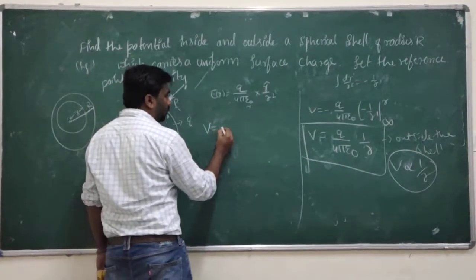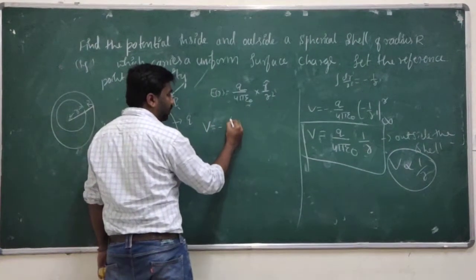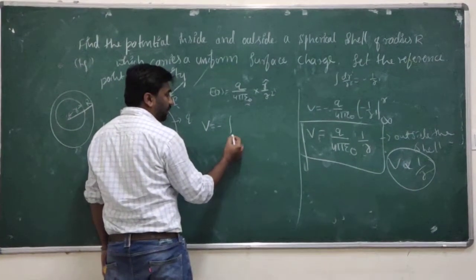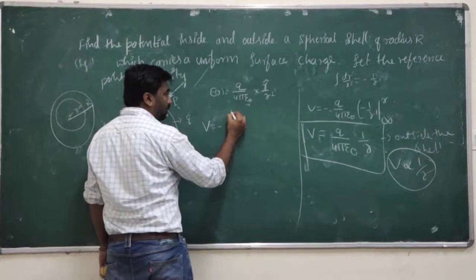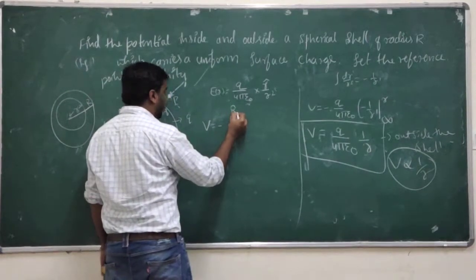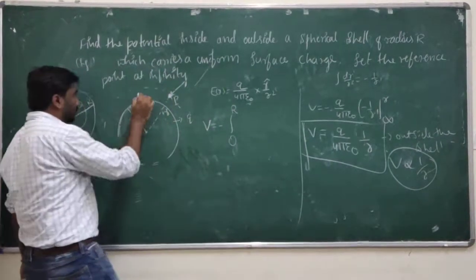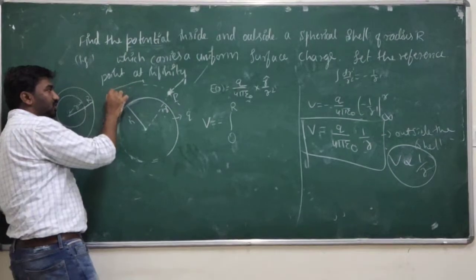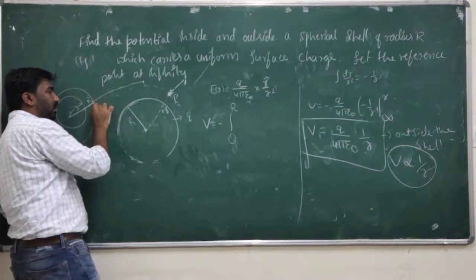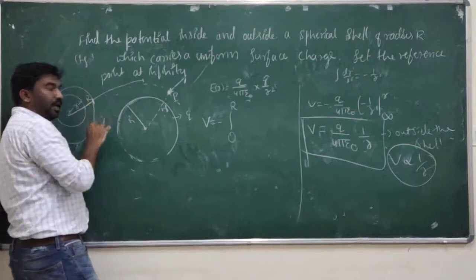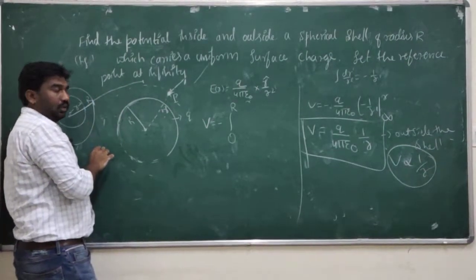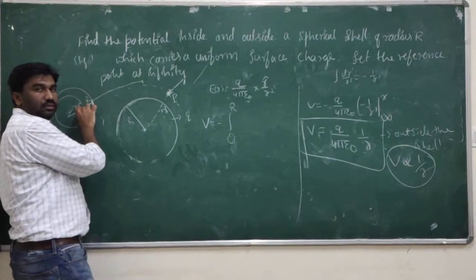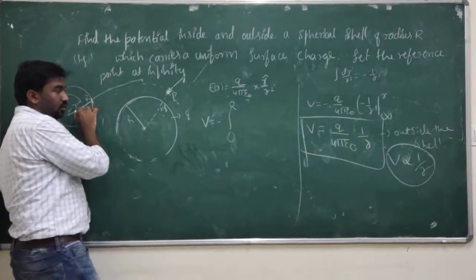V is equal to minus of the integral from the reference point to a given point r. For example, this is our reference point. First we have to bring the charge from the reference point to this point, and then from r to r — meaning from the shell surface to the interior point.